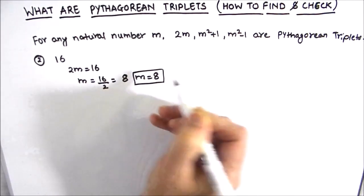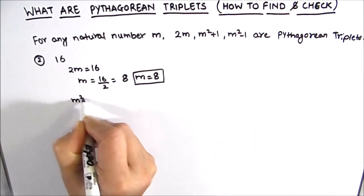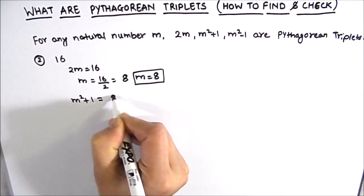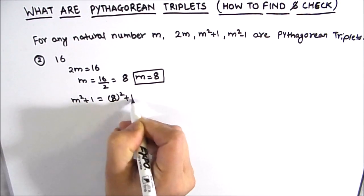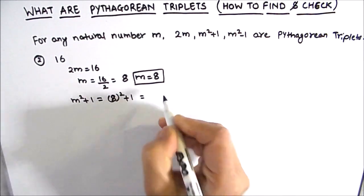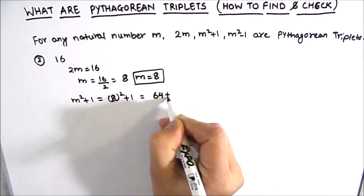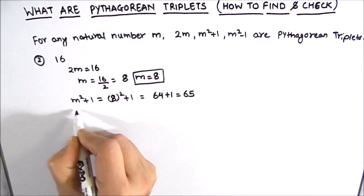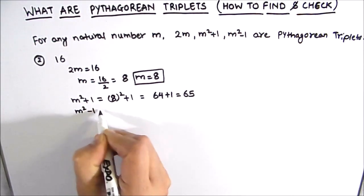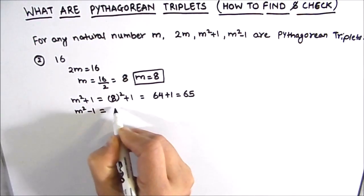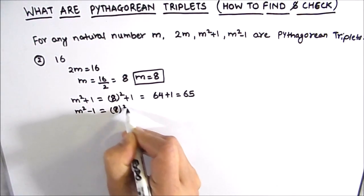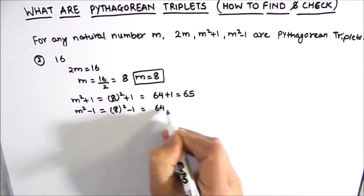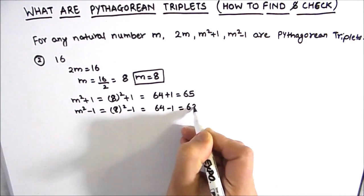Now we need to find m²+1 and m²−1. So m²+1 = 8²+1 = 64+1 = 65, and m²−1 = 8²−1 = 64−1 = 63.